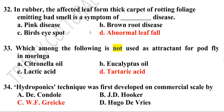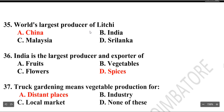Thirty-second question: In rubber, the affected leaf forming a thick carpet of rotting foliage emitting a bad smell is a symptom of abnormal leaf fall disease. Thirty-third question: Which among the following is not used as an attractant for pod fly in moringa? Tartaric acid is not used as an attractant. Thirty-fourth question: Hydroponics technique was first developed on a commercial scale by W.F. Gericke.